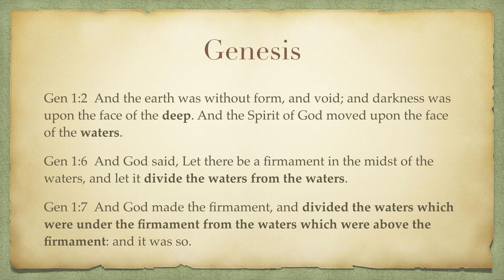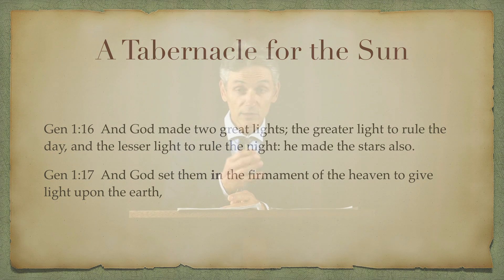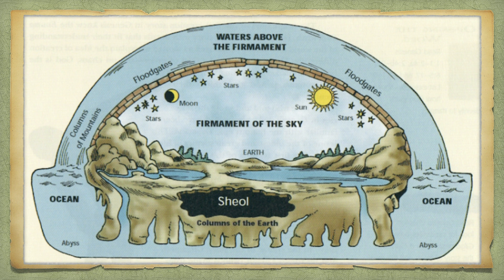Psalm 19:1-4 says the heavens declare God's glory, the firmament shows his handiwork, and in that firmament he set a tabernacle for the sun — not outside it, but inside it. Genesis 1:16-17: 'God made two great lights, the greater light to rule the day and the lesser light to rule the night; he made the stars also, and God set them in the firmament of heaven to give light upon the earth.' Within that firmament is the earth, the sun, moon, and stars.